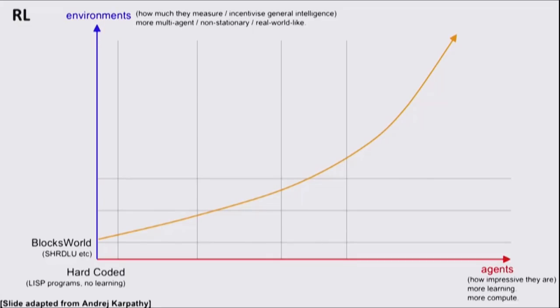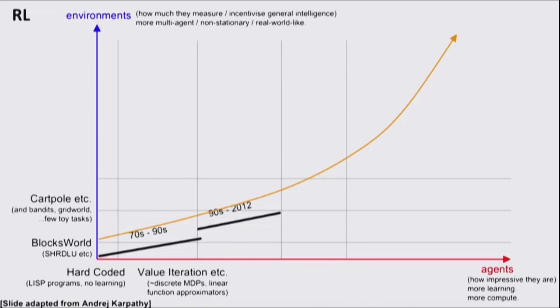If we look at historically building controllers, initially we would just hard code them for simple environments. Then later over time we developed as a community value iteration, policy iteration, and so forth which could allow us to solve bigger blocks worlds problems and maybe even some cart pole problems.